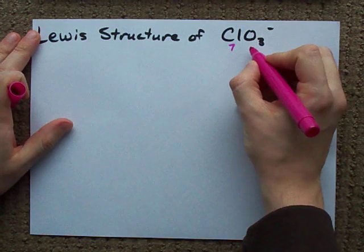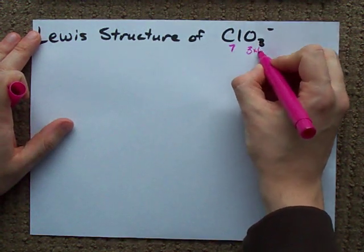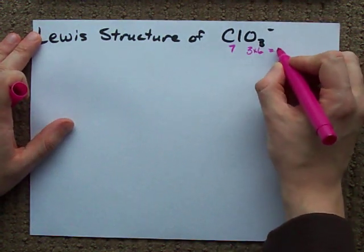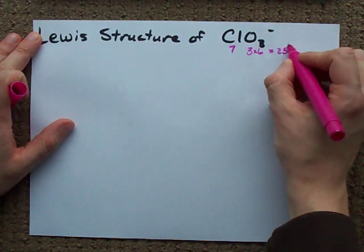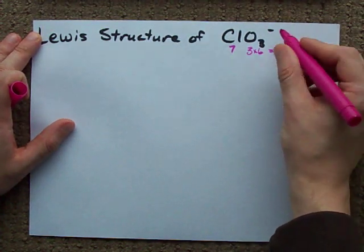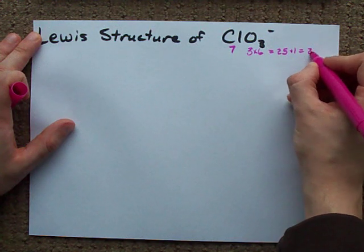Chlorine brings 7, oxygen brings 6 each. Total those up, you get 25, but you have to add 1 because the charge on the ion itself is minus 1.